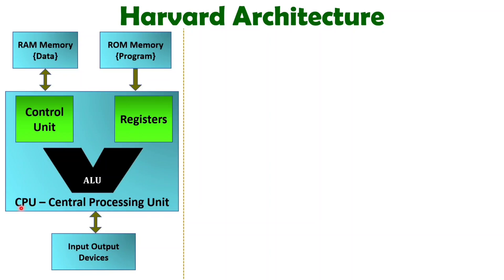The CPU structure is common for almost all computer systems. It will be having a control unit, registers, and ALU. To give input, there are input devices like keyboard or mouse. With output devices, you can have a monitor, printer, or speakers. Based on requirement, various output devices can be interfaced with the CPU.